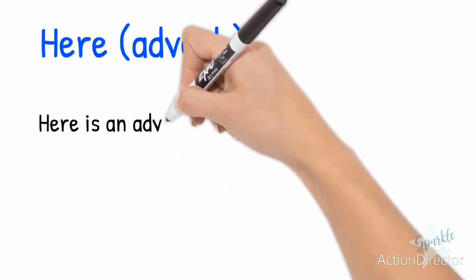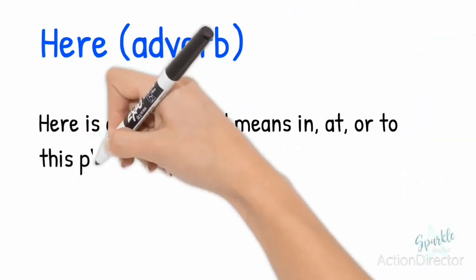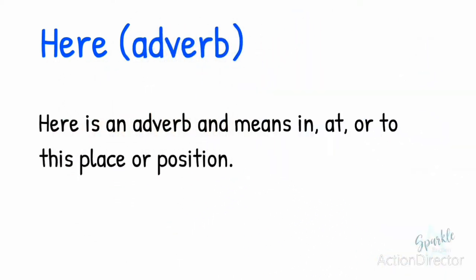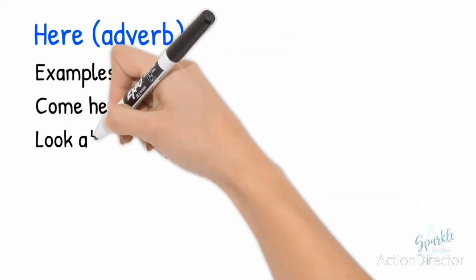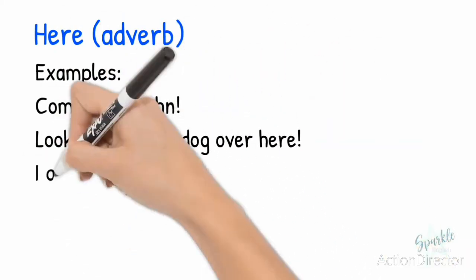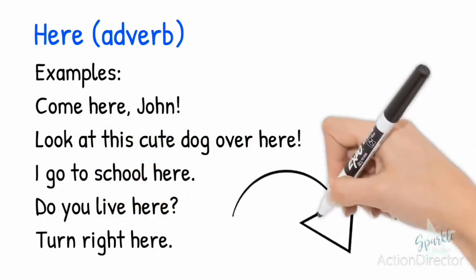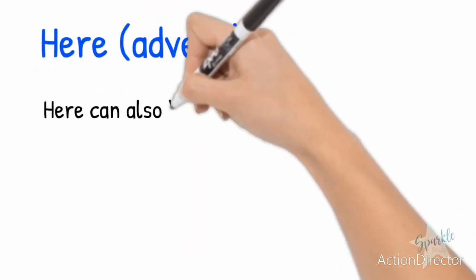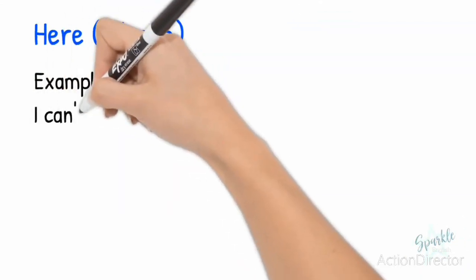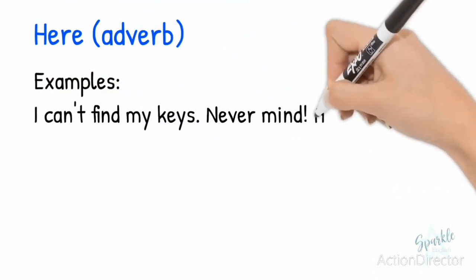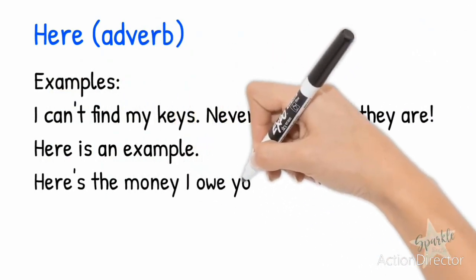Here, spelled H-E-R-E, is an adverb and means in, at, or to this place or position. Let's look at some examples: Come here, John. Look at this cute dog over here. I go to school here. Do you live here? Turn right here. Here can also be used when introducing something or someone: I can't find my keys — never mind, here they are. Here is an example. Here's the money I owe you.